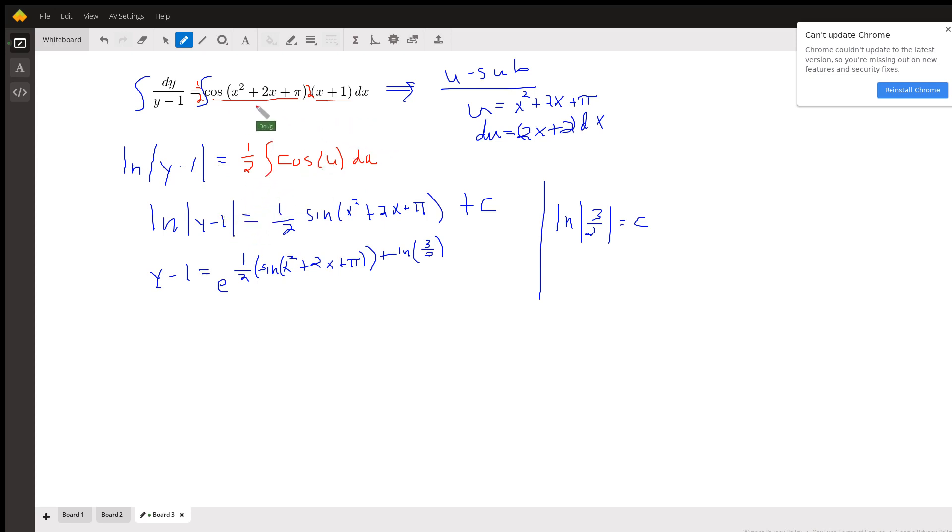And to find the antiderivative of this expression, we have to use u substitution. If I let u equal x squared plus 2x plus pi, the parameter of the cosine function, and du equals 2x plus 2 dx.